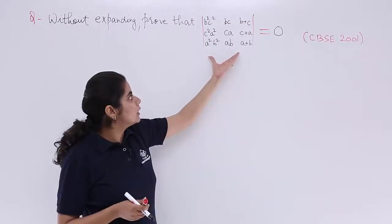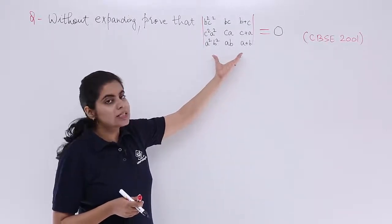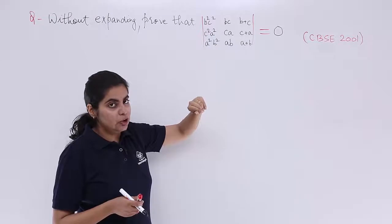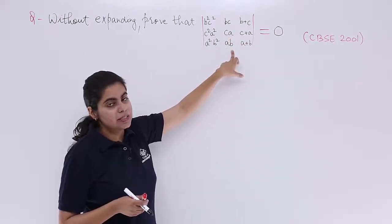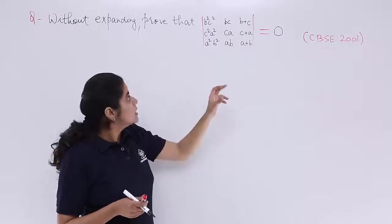Now when you see this determinant, you see some things which are going on in a cyclic order. That means if BC is here, CA is here, AB is here. ABC in all is not there. Similarly, B square C square is here.